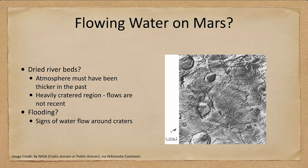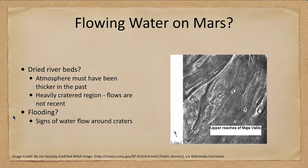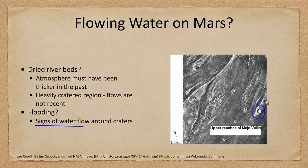How about flooding? We have signs of water flow around craters. Around this region you can see where water had flowed around some of these craters — material built up so the crater itself diverted a water flow around it. You can see various features we would associate with flash flooding here on Earth, indicating there has been flooding on Mars in the past.